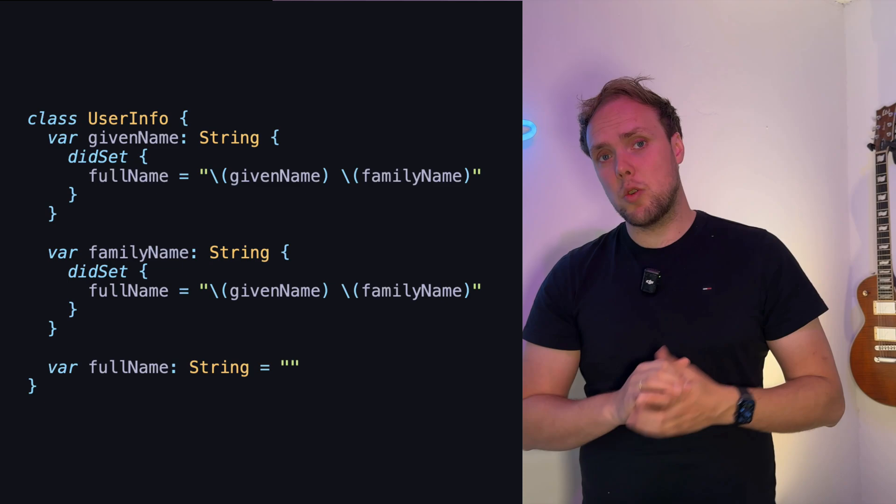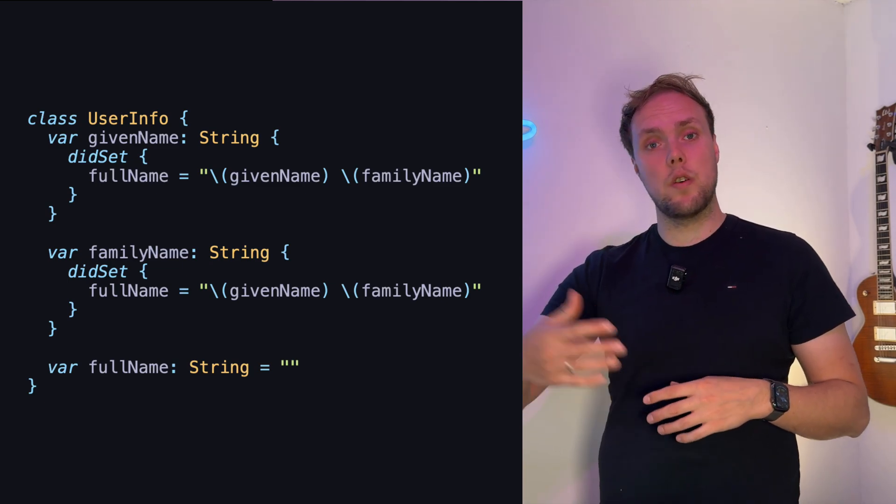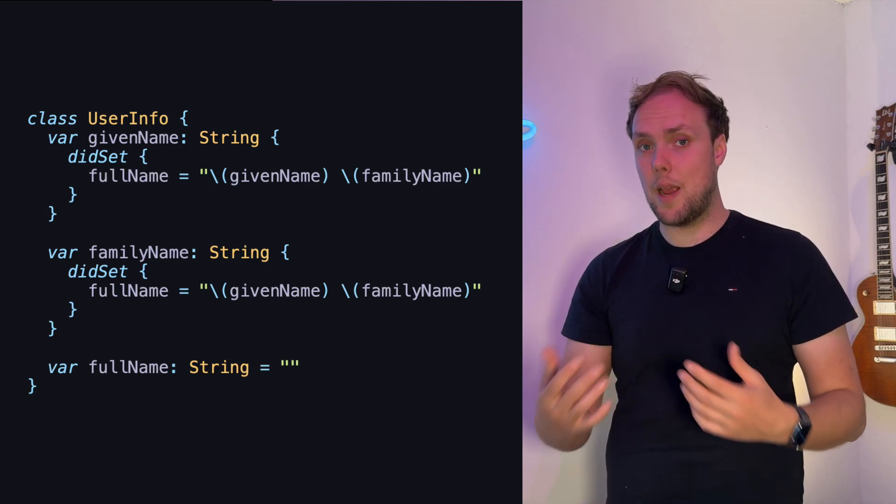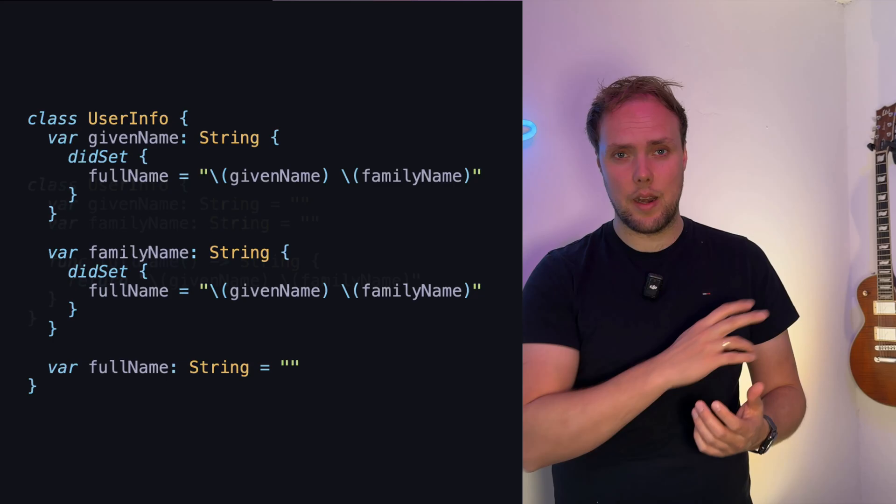A second approach we could take, which I already like a lot better, is to use a function. We could call a function full name on this same object to get a combination of family name and given name. Here's what that would look like.